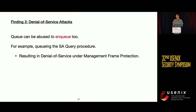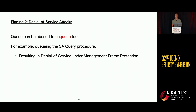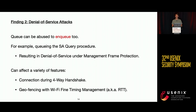In our second finding, we found denial-of-service attacks. The key takeaway is that we don't only take data from queues — we can also exploit the system by putting specific frames into the queue. An example is the SA (Security Authentication) query procedure, a protection mechanism for management frames. We can force the access point to queue these frames, causing a timeout and disconnecting clients. This enqueuing approach works with features like the four-way handshake or geo-fencing applications using Wi-Fi fine timing measurements.